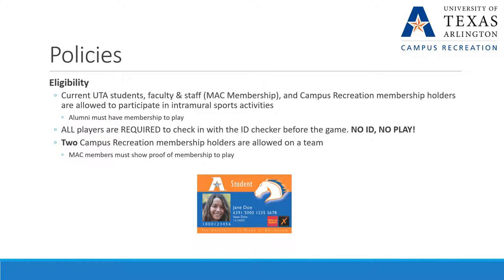Eligibility to play intramural sports is available to current UTA students, faculty and staff that have a MAC membership, and Campus Recreation membership holders. Alumni must have a membership to play. All players are required to check in with the ID checker before the game — if you don't have your ID, you cannot play that night. Two Campus Recreation membership holders are allowed on a team maximum. MAC members must show proof of membership to play.